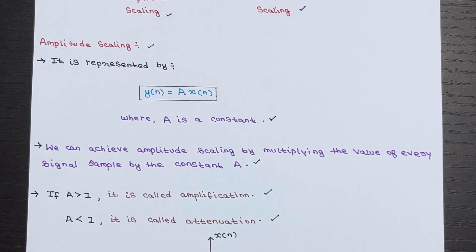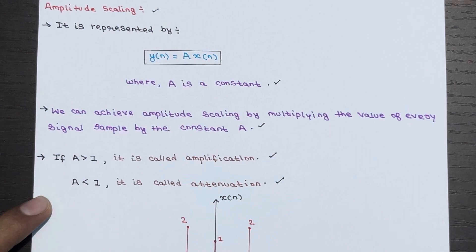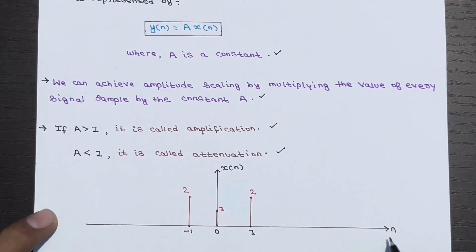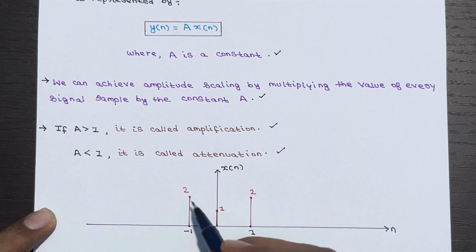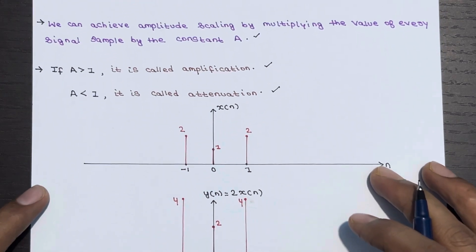As the name suggests, amplitude scaling rescales the amplitude of the signal. Let's understand this with an example. I have the signal x(n): at n = 1, the value is 2; at n = 0, the value is 1; at n = -1, the value is 2.